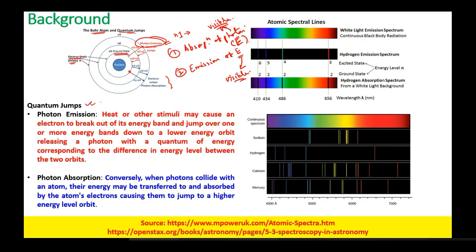What are quantum jumps? In photon emission, heat or other stimuli may cause an electron to break out of its energy band and jump down to a lower energy orbit, releasing a photon with a quantum of energy corresponding to the difference in energy level between the two orbits. These jumps in energy levels are called quantum jumps.